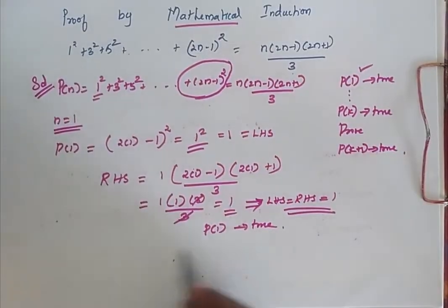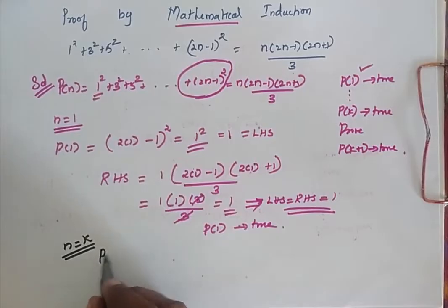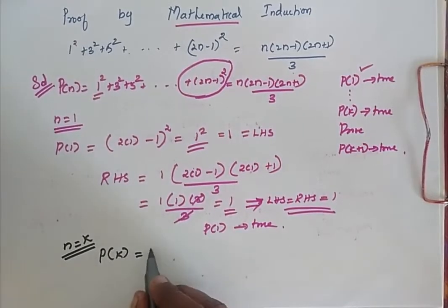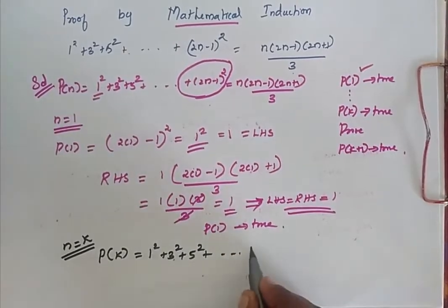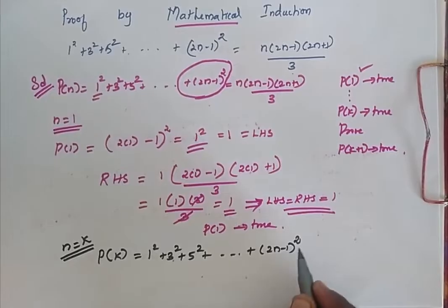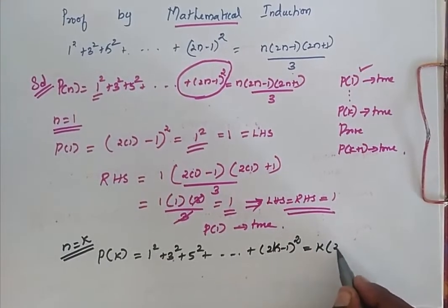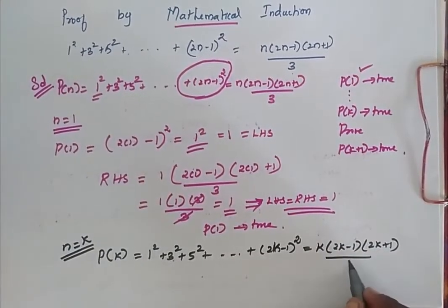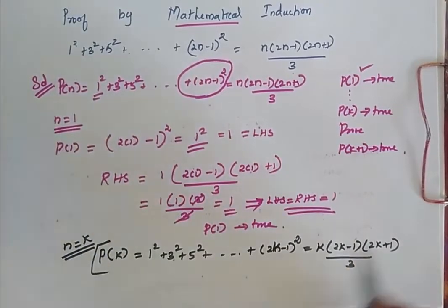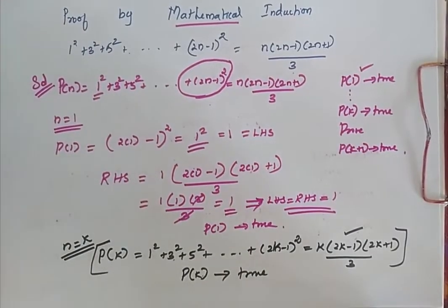Since my P of 1 is true, I assume that my P of K is true where my N is equal to K. So P of K is equal to 1 squared plus 3 squared plus 5 squared plus ... plus 2K minus 1, the whole square, which is equal to K into 2K minus 1 into 2K plus 1 by 3. Remember this — we will be using it for further proof. So I assume that my P of K is also true.